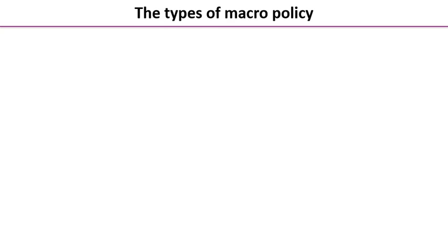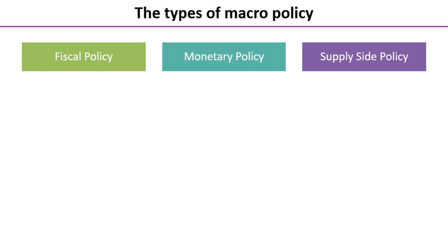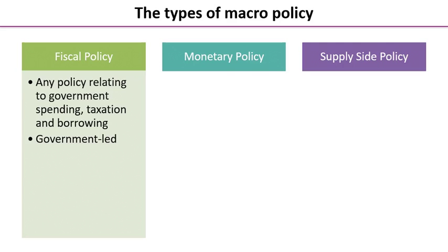All macroeconomic policy is designed to help achieve one or more of those objectives. The three categories of macro policy you need to know about are: fiscal policy, monetary policy, and supply-side policy. In this online lesson we're focusing on fiscal policy. Fiscal policy covers any policy relating to government spending, tax, and borrowing — it is led by the government.